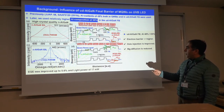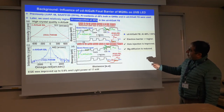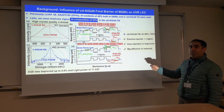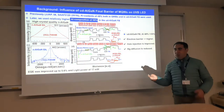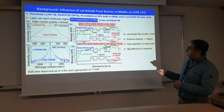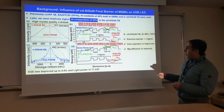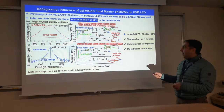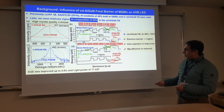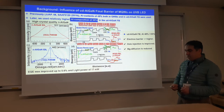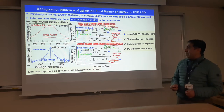This is the active region quantum well. Previously we used a final barrier with very low aluminum, so the electron blocking was not enough to radiate in the quantum well. So we enhanced the potential barrier height of the final barrier. With this, we improved the EQE to 5.6% and light output power of 17 milliwatts under 80 milliamps.